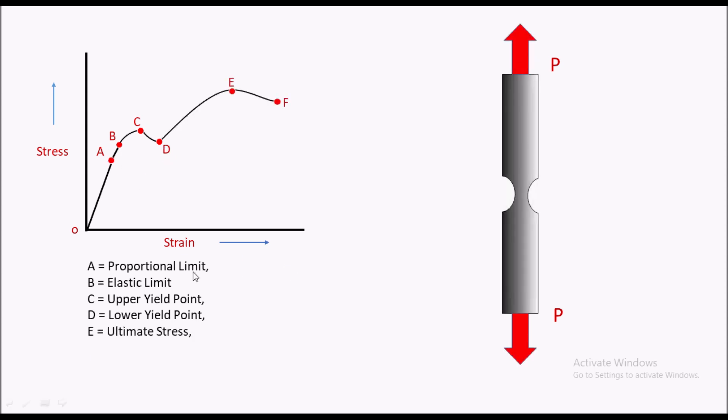Now the next point is point E, that is the ultimate stress. Here we can see there is increase in stress and strain. Both are increasing but they are not proportionally increasing.